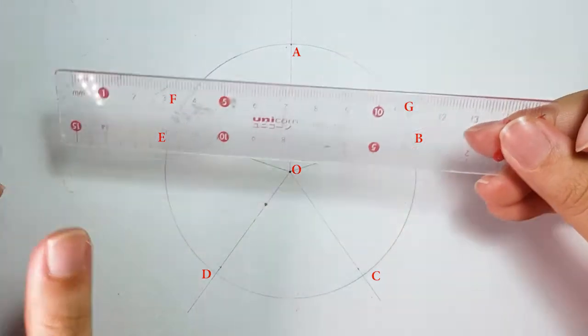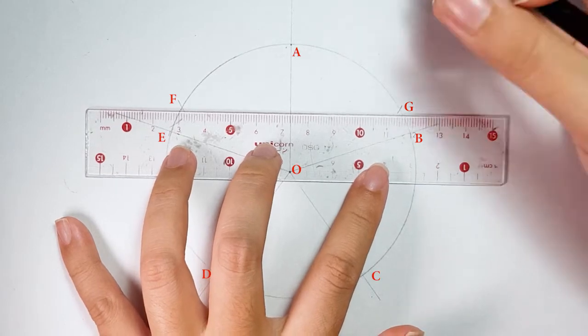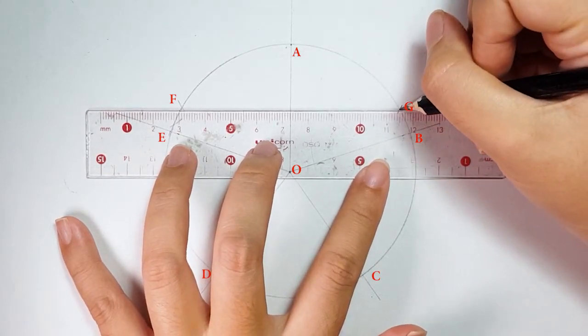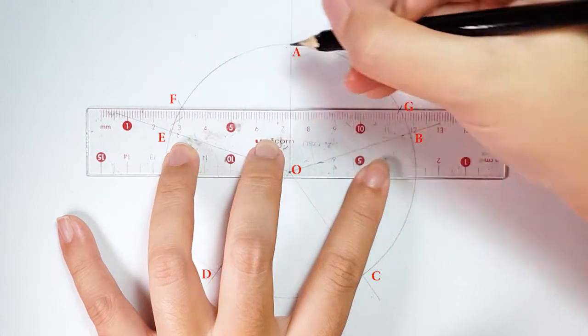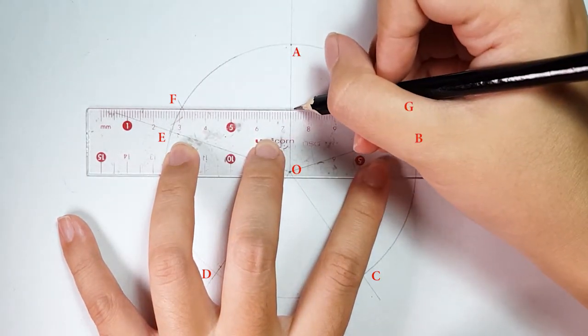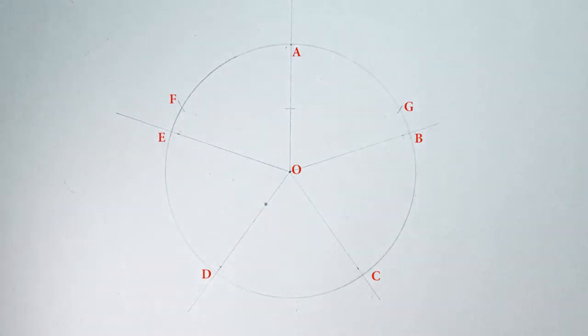Place your ruler at point F and G, then draw a mark on line OA. This point is called point 1.